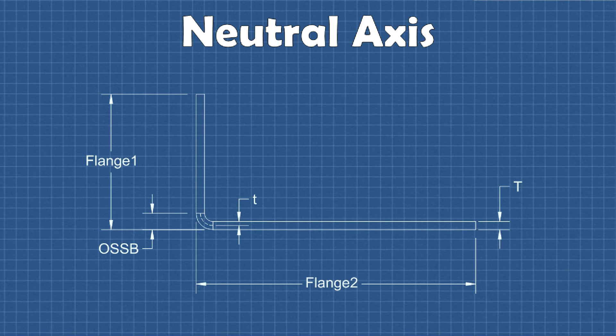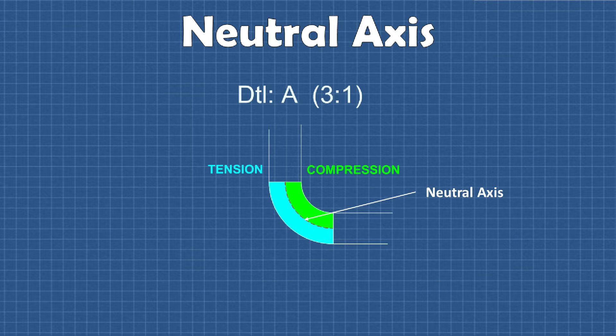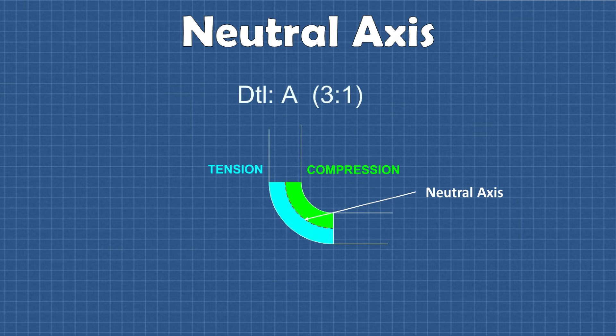To understand what the k-factor is, first we must understand something called the neutral axis. This neutral axis is a line where there is neither compression nor tension within the material. Just to be clear, it's called an axis because it's often described in 2D terms, but it's really a plane that runs through the entire length of the bend region.